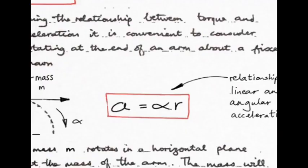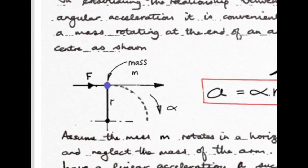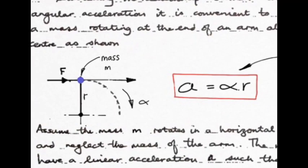Next, remember that a equals alpha r. Here, a is the linear acceleration of a body measured in meters per second squared, and alpha is the angular acceleration measured in radians per second squared — the tie-up between the two is radius. If we look at a body rotating about an axis with radius r, going round in a circle, at any instant the linear acceleration is a and the angular acceleration is alpha, tied together by radius.